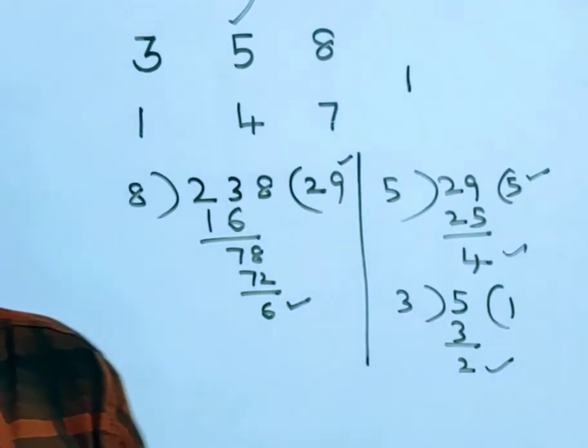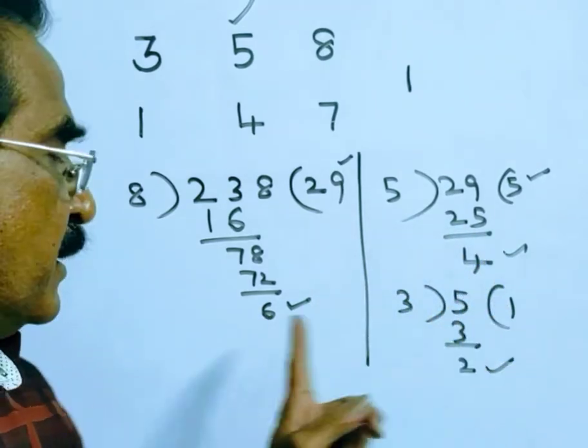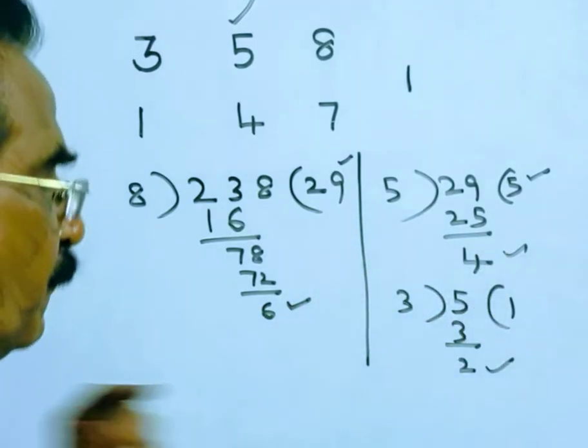So we want the product of these remainders: 6 into 4 into 2. 6 into 4 is 24, 24 into 2.